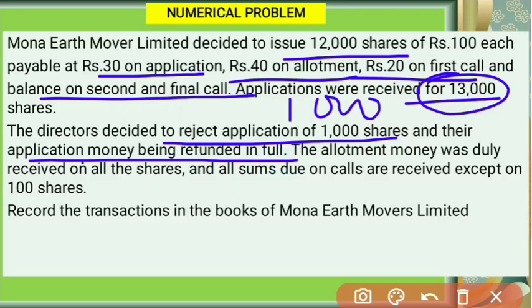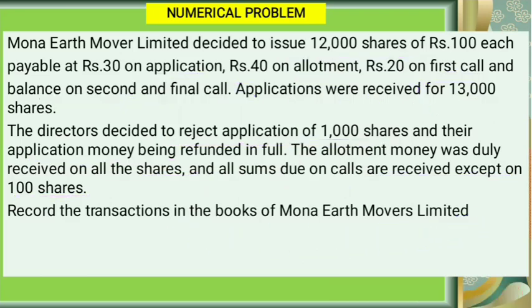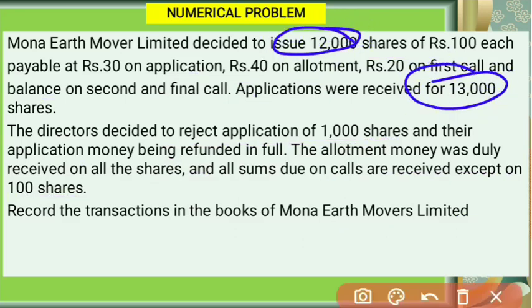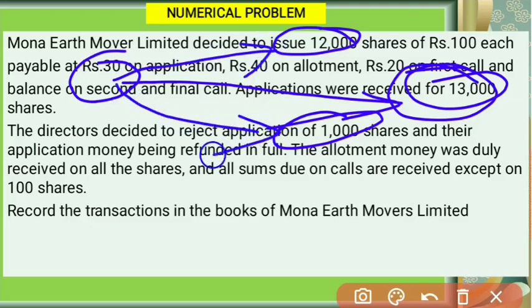The directors decided to reject the application of 1,000 shares and their application money was refunded in full. The allotment money was received on all shares and all sums due on calls were received except on 100 shares. Now let's see the journal entries for application of 13,000 shares, then transfer to capital for 12,000 shares, and return of money for 1,000 shares.